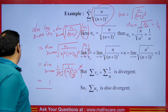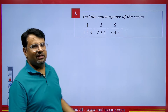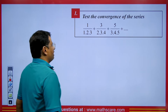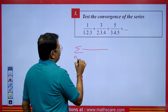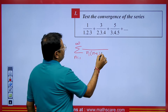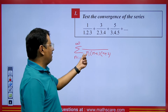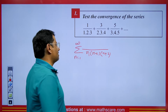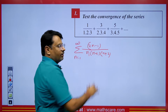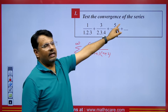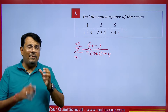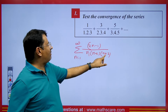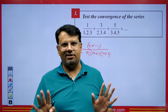Now we have a new question where we are asked to test the convergence of a series. The nth term is n over (n+1)(n+2)(n+3). Looking at this, numerator has degree n and denominator has degree n cubed. Cancel them and you get 1 upon n squared, which is convergent by the p-series test. You can solve this question in a single glance if you are preparing for any exam.